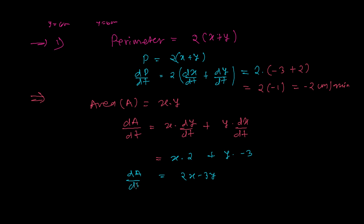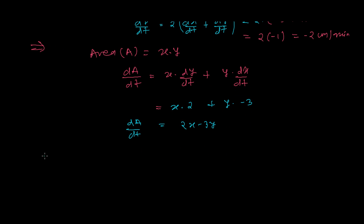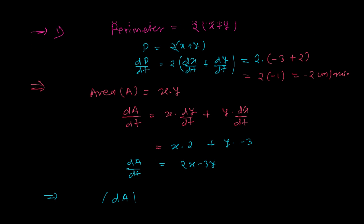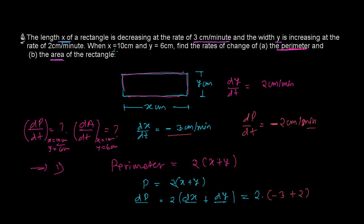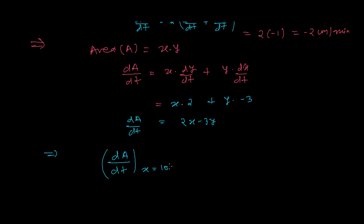So dA over dt equals 2x minus 3y. The question says to evaluate when x equals 10 cm and y equals 6 cm. So it's 2 times 10 minus 3 times 6, which is 20 minus 18, giving us 2.